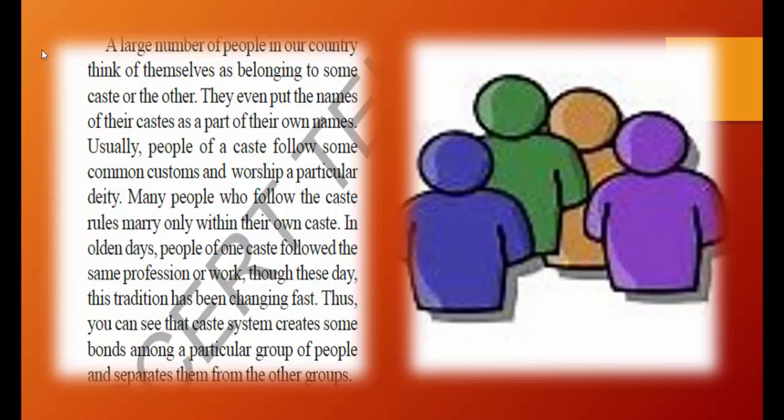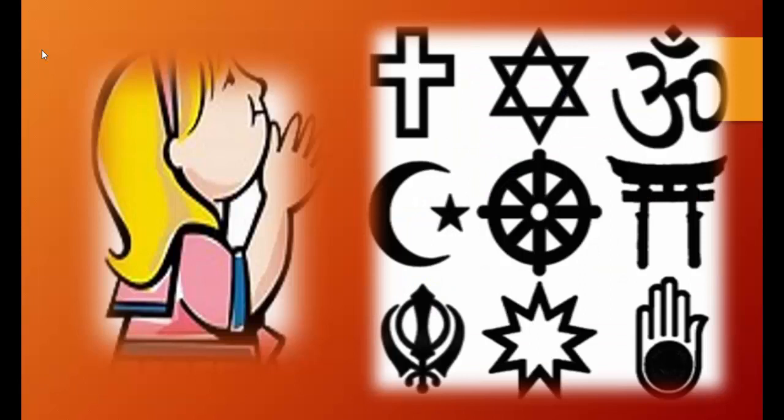Look at this picture, children. You see many colors — different colors for the persons. In the same way, in India we have different castes. A large number of people in our country think of themselves as belonging to some caste or the other. They even put the names of their caste as a part of their own names. You have seen some names like Reddy, Naidu, Sharma, and so on. Usually, people of a caste follow some common customs and worship a particular deity.